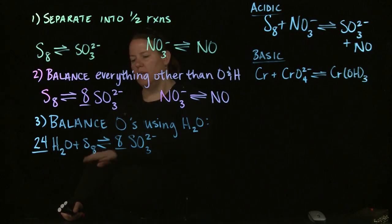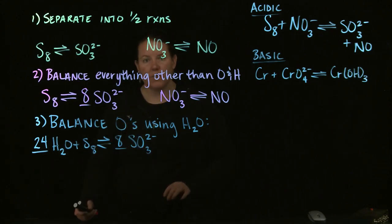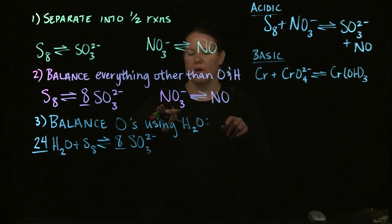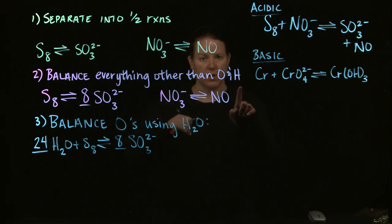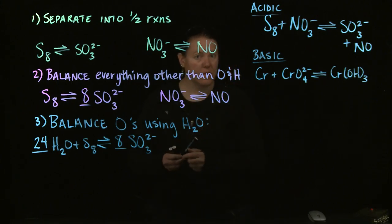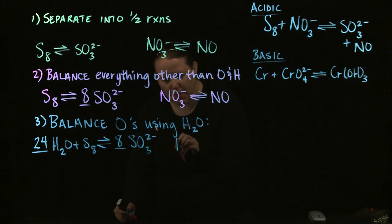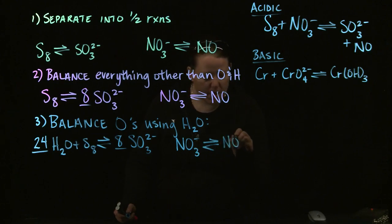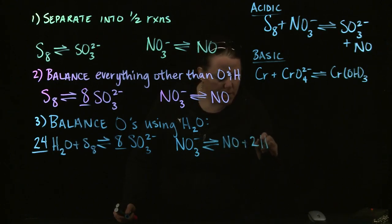Now I have the same number of O's on either side. For the nitrogen half reaction, here I have three O's and here I have one O, so I need to add two waters to the side with the smaller number of O's. So: NO3- gives NO plus 2 H2O's.